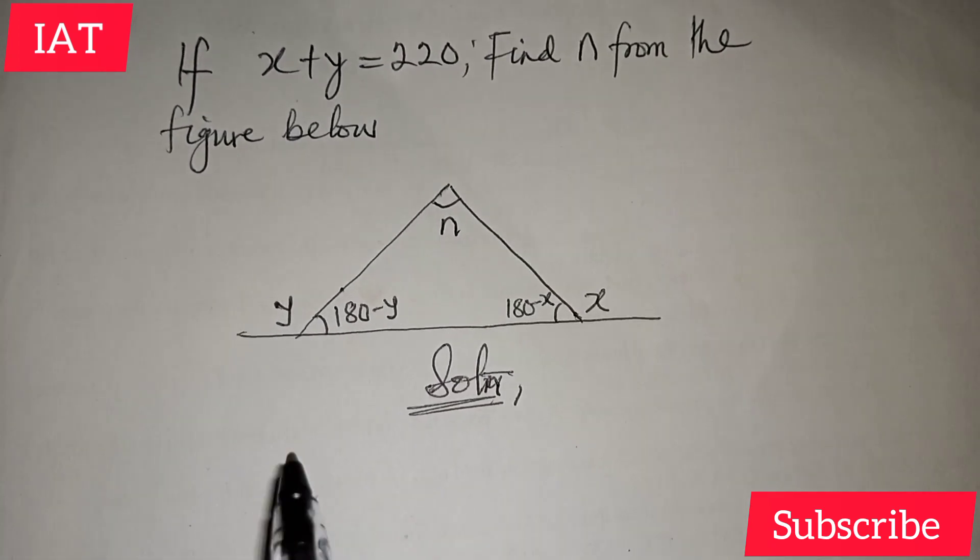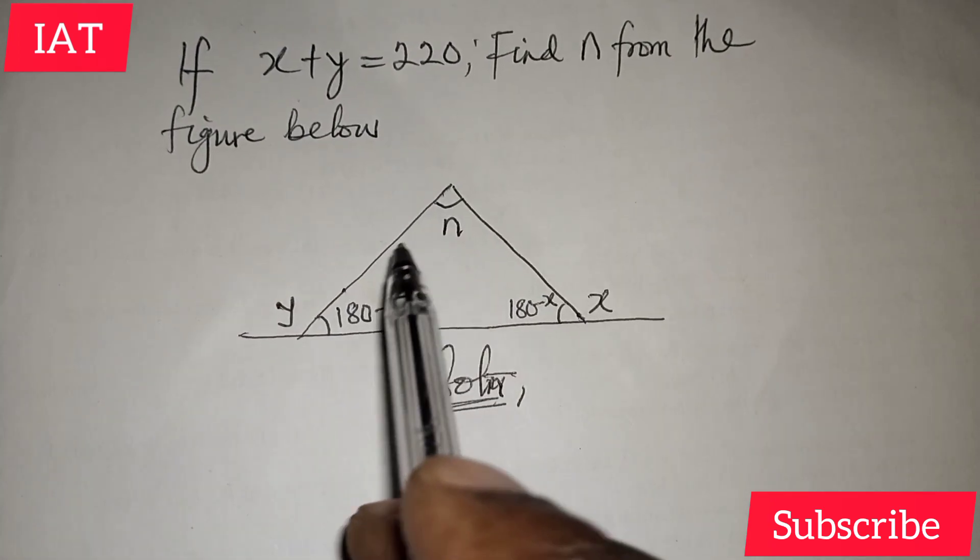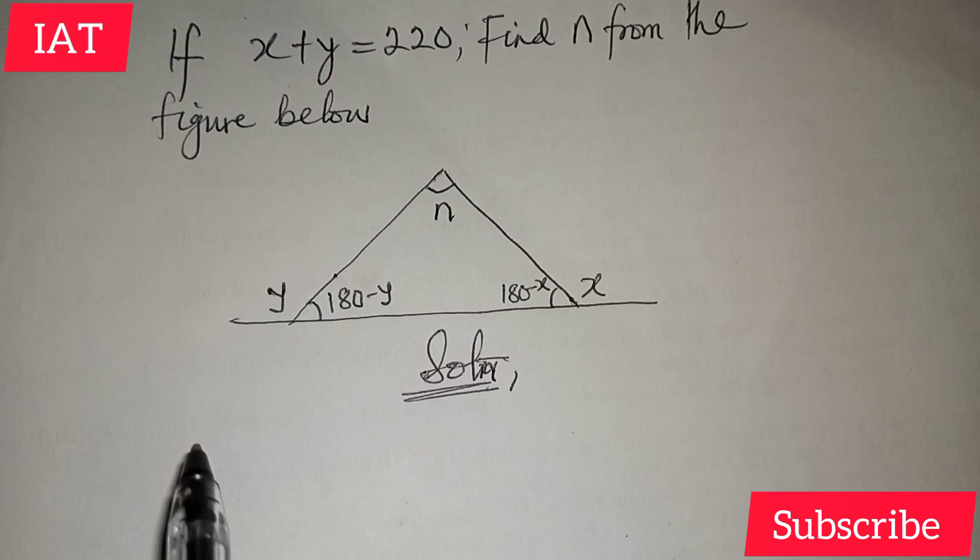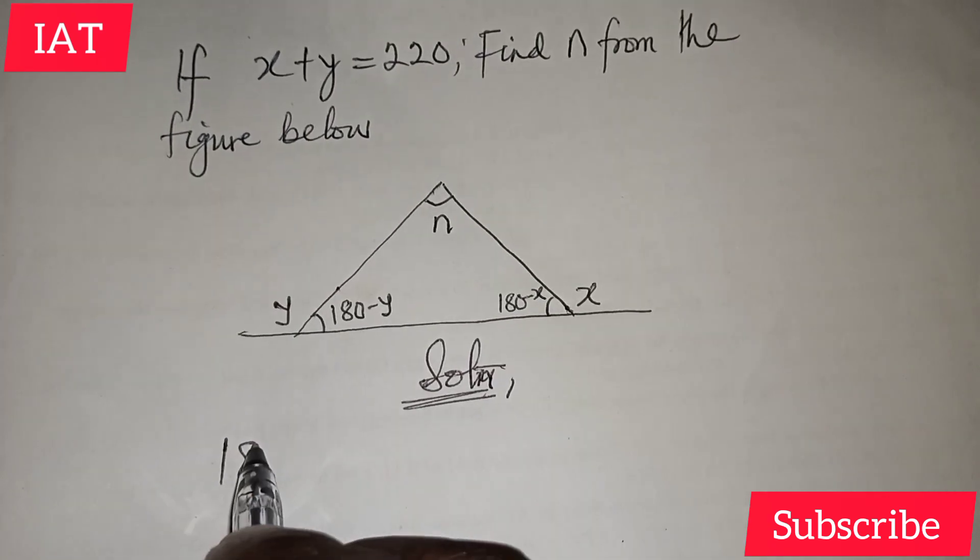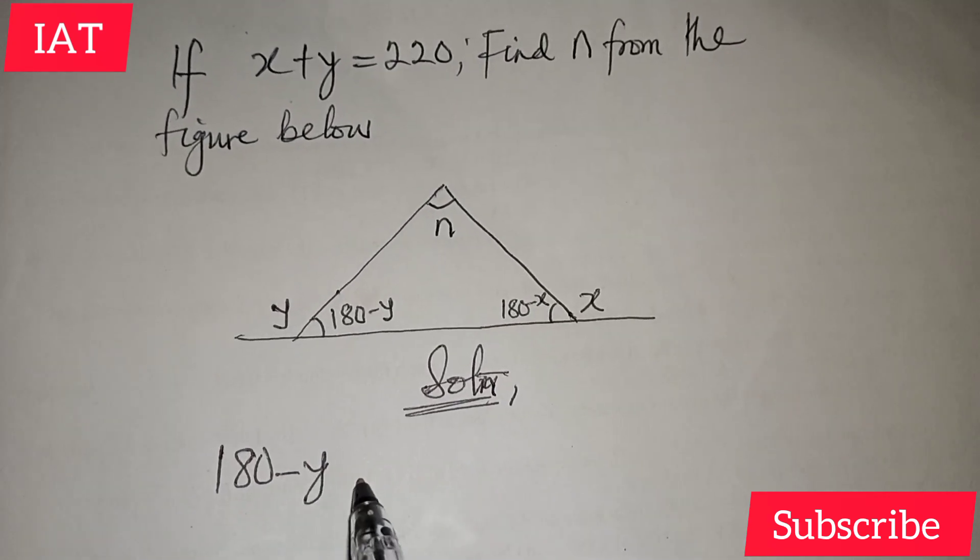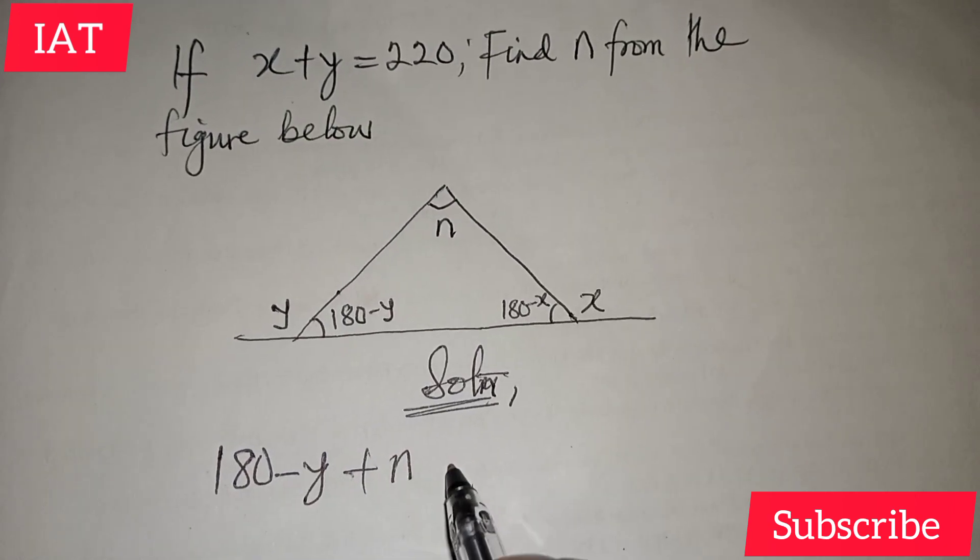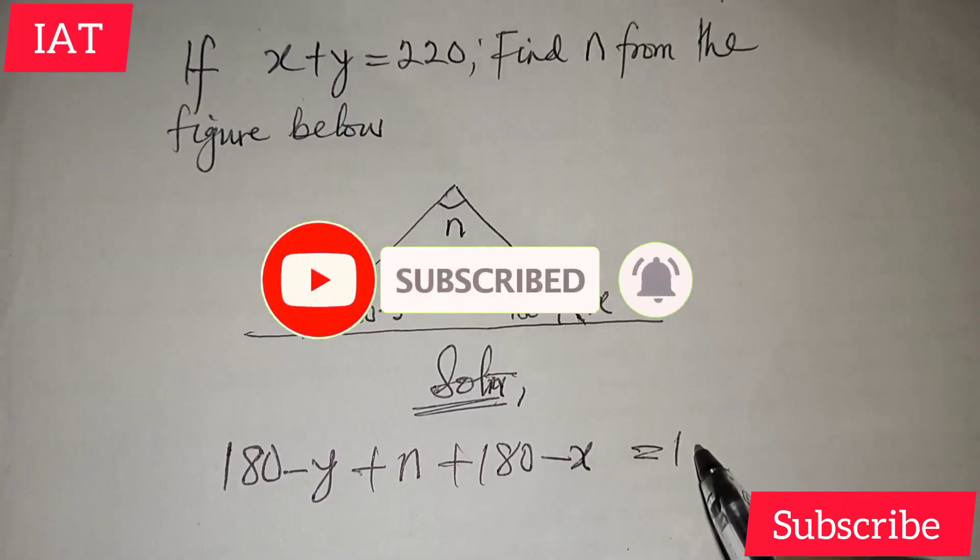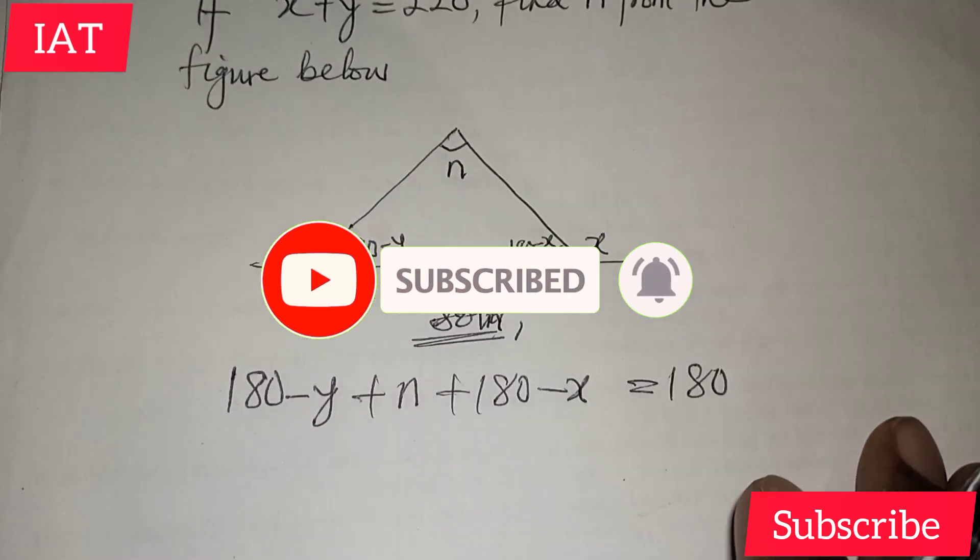We know that sum of angles in a triangle is 180 degrees, so let's sum up all the angles we have in here. We have 180 minus y plus n plus 180 minus x, and all of this equals 180. The reason is sum of angles in a triangle.